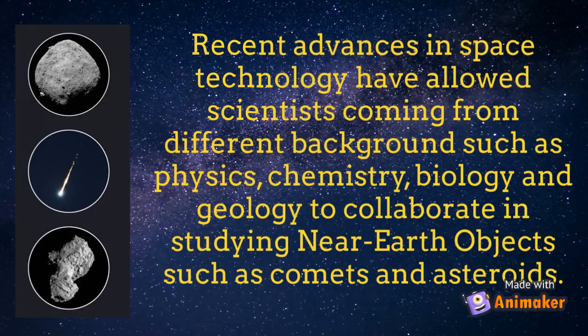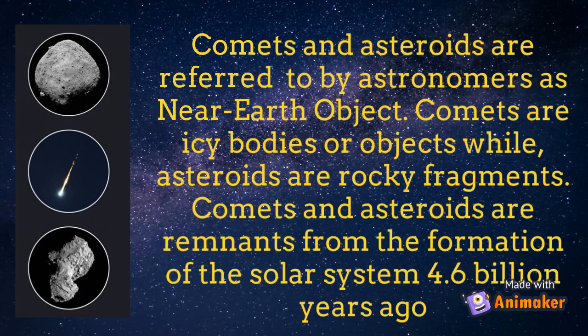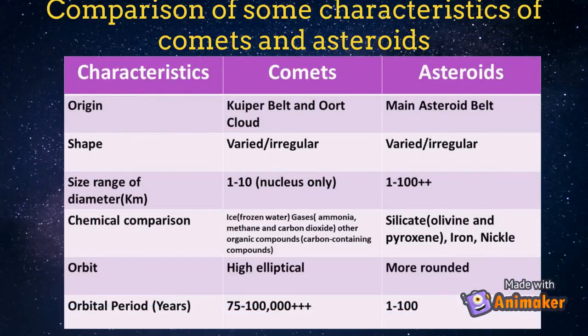Recent advances in space technology have allowed scientists from different backgrounds such as physics, chemistry, biology and geology to collaborate in studying near-Earth objects such as comets and asteroids. Comets and asteroids are referred to by astronomers as near-Earth objects. Comets are icy bodies while asteroids are rocky fragments — both are remnants from the formation of the solar system 4.6 billion years ago. The table shows a comparison of some characteristics of comets and asteroids.